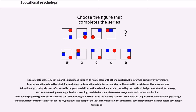Educational psychology informs educational technology, curriculum development, organizational learning, special education, classroom management, and student motivation. It both draws from and contributes to cognitive science and the learning sciences. In universities, departments of educational psychology are usually housed within faculties of education, possibly accounting for the lack of representation of educational psychology content in introductory psychology textbooks.